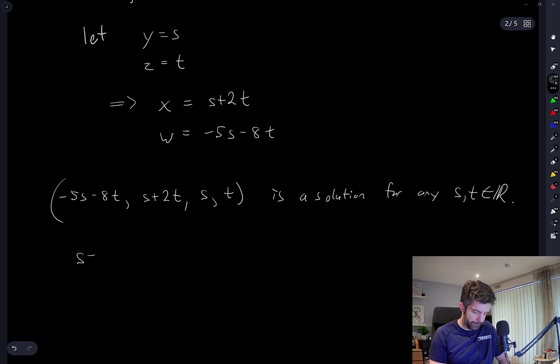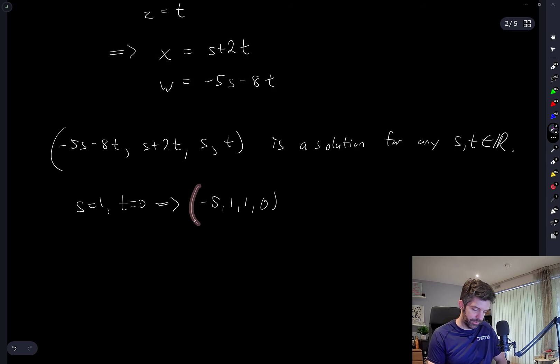So we have negative 5, 1, 1, 0, which is one of those, it's kind of like that special vector that everything was based off of in the original problem.